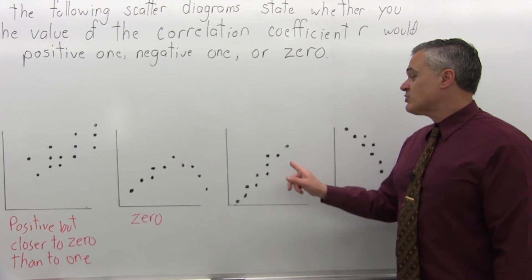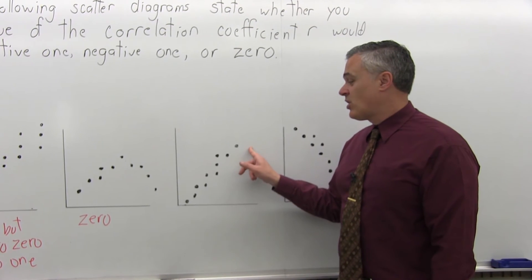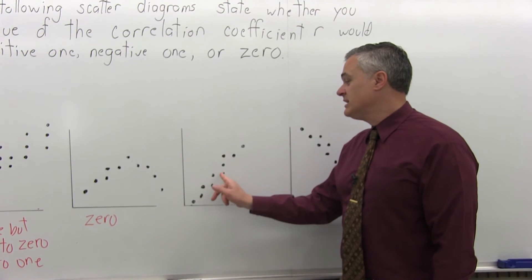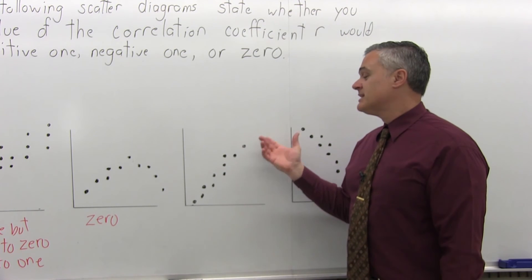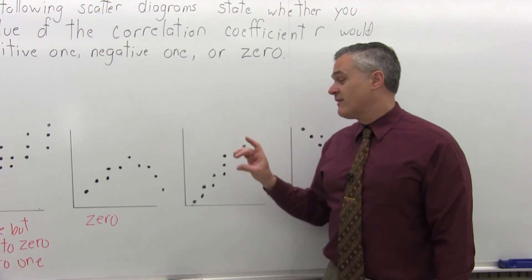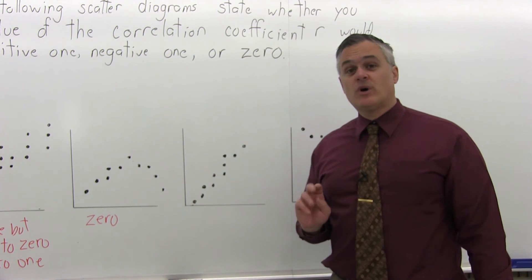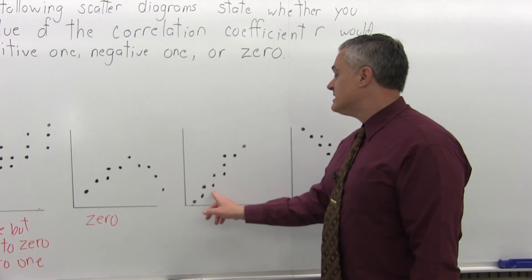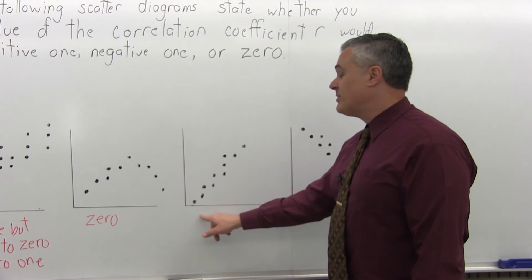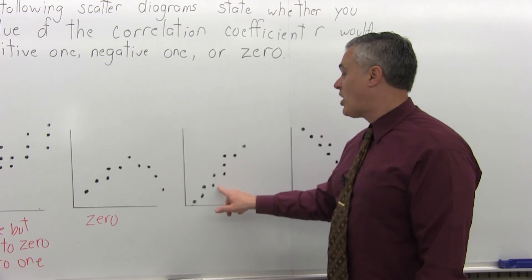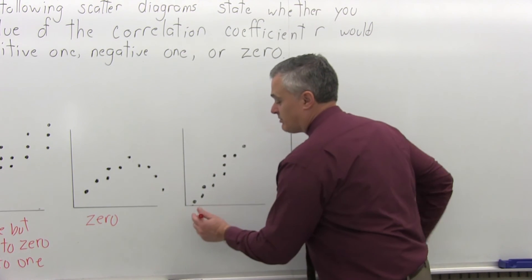Now, the next one over, it definitely has a strong linear relationship. You can really see that's where the line's going. The dots, they're never really going to be right on the line, but they're very close in this one. Now, close to 1, but is it positive or negative? Since the line would be going up as you move from left to right, that would be a positive 1. So this one is close to positive 1.